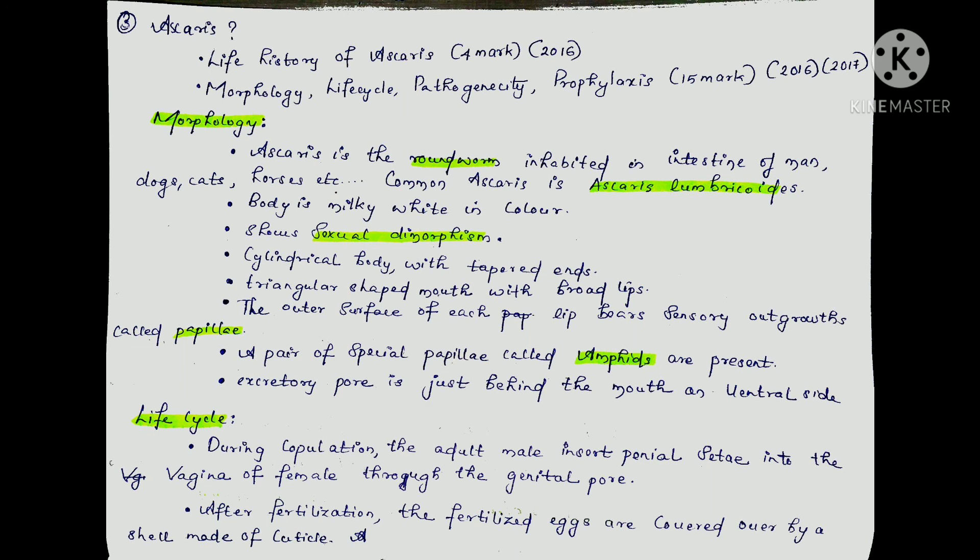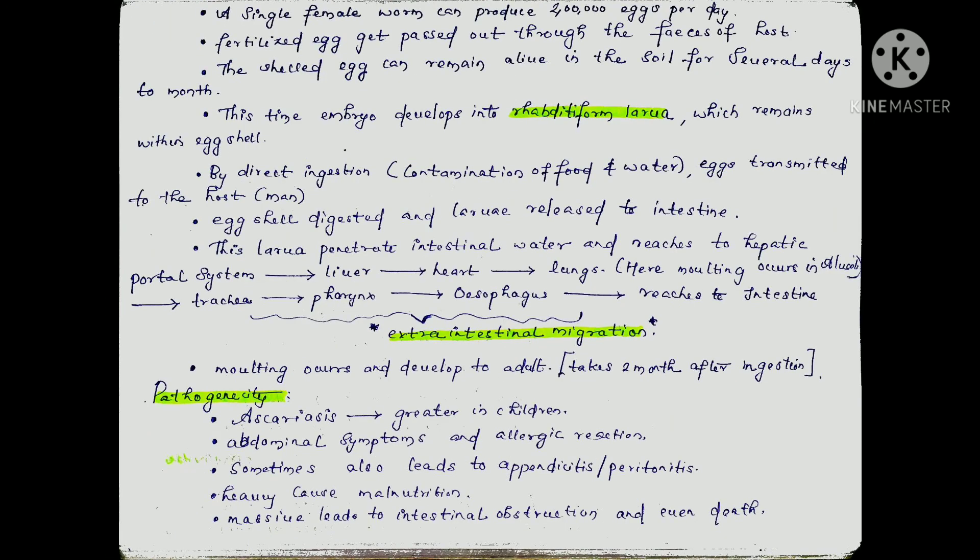During copulation, the adult male inserts the penial spicule into the vagina of the female through the genital pore. After fertilization, the fertilized eggs are covered by a shell made of cuticle. A single female worm can produce 2 lakh eggs per day. Fertilized eggs are passed out through the feces of the host. The shelled egg can remain alive in the soil for several days to months. During this time, the embryo develops into rhabditiform larvae, which remains within the egg shell.